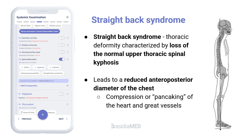Straight back syndrome is a thoracic deformity characterized by loss of the normal upper thoracic spinal kyphosis. This deformity leads to a reduced anteroposterior diameter of the chest, causing compression or pancaking of the heart and great vessels.